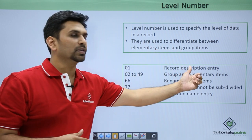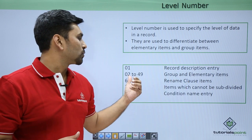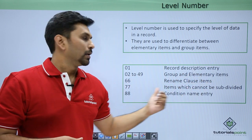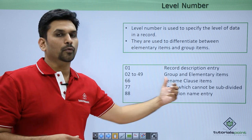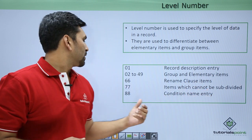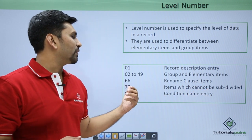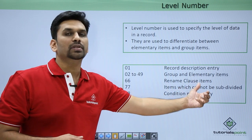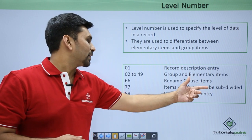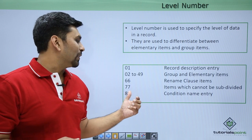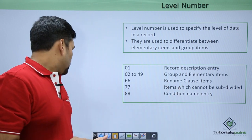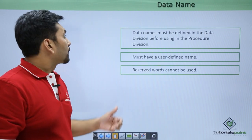01 is for record description entry. Then from 02 to 49 we have group and elementary items. Then 66 is reserved for the rename clause, which we will discuss in coming videos. Then we have 77 — these items can never be further subdivided, which we will also cover in the next video. Then we have 88 level, which are condition name entries.